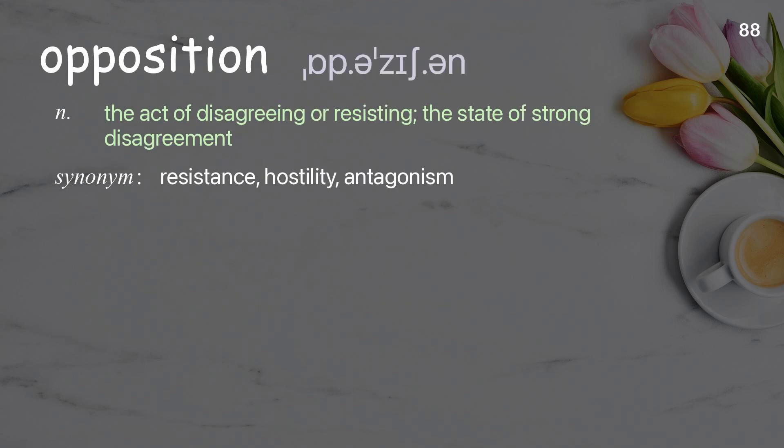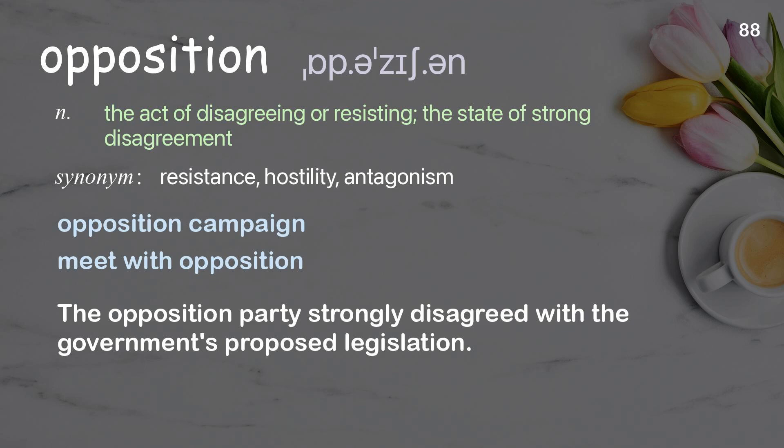Opposition: the act of disagreeing or resisting; the state of strong disagreement. Examples: opposition campaign, meet with opposition. The opposition party strongly disagreed with the government's proposed legislation.